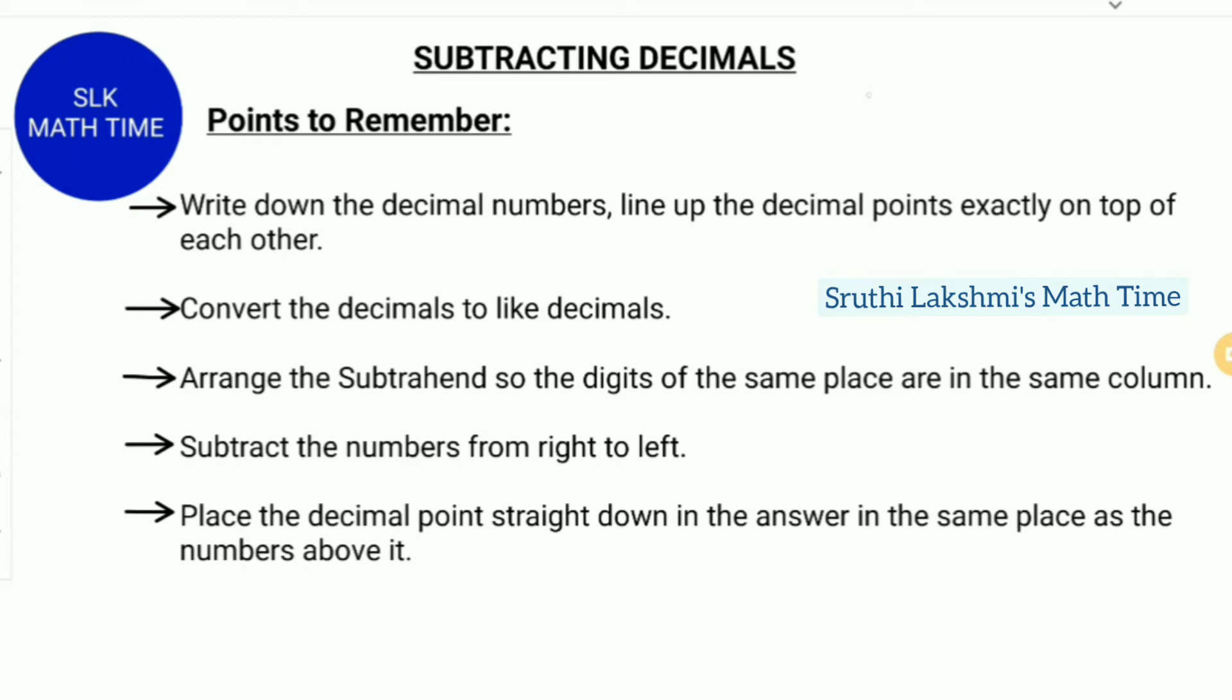So let's see the steps. First, we have to write down the decimal numbers and remember that we have to line up the decimal points exactly on top of each other. Next, convert the decimals to like decimals.